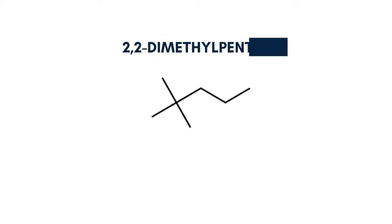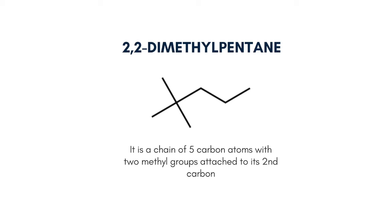Now the fourth one is 2,2-dimethylpentane, which is a chain of 5 carbon atoms with 2 methyl groups attached to its second carbon. Here we take out 2 carbon atoms out of the chain and attach them to the second carbon as 2 methyl groups.